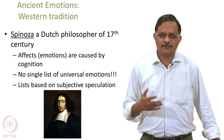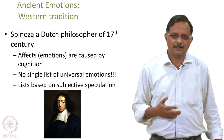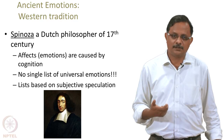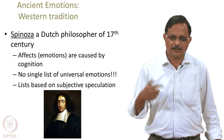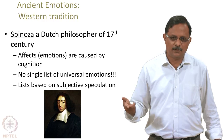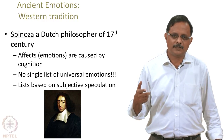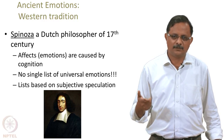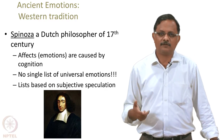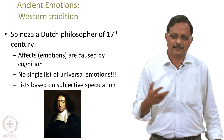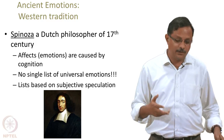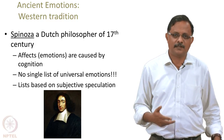Spinoza, a Dutch philosopher of the 17th century, emphasized the role of cognition in emotions — a question we will return to again and again. The problem is that different authors have given different lists of emotions, but there is nothing like a universal list. A lot of these lists are based on subjective speculation and do not have the strength of universality.